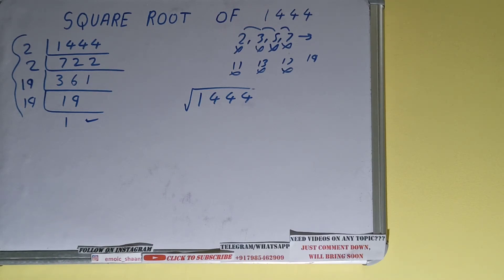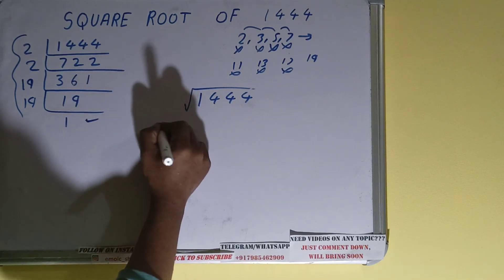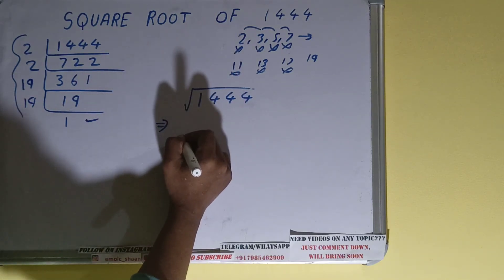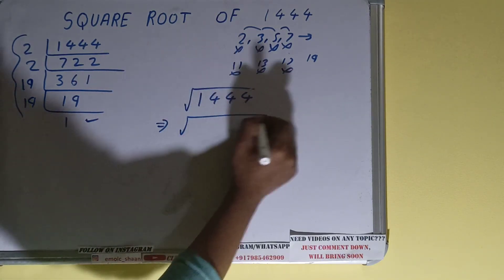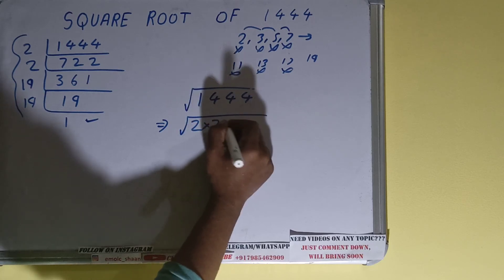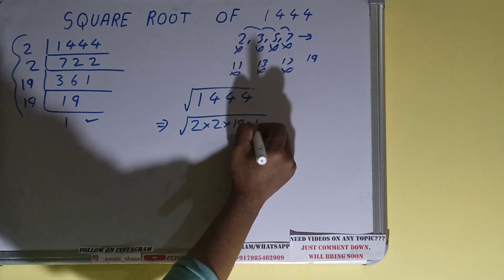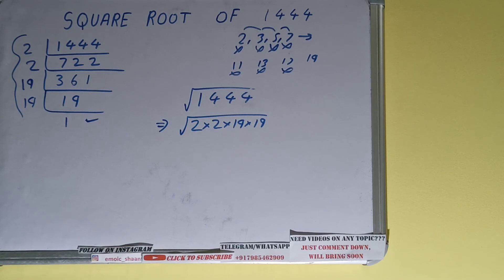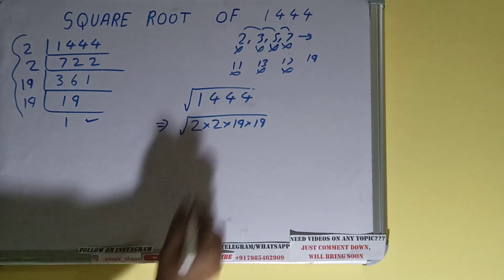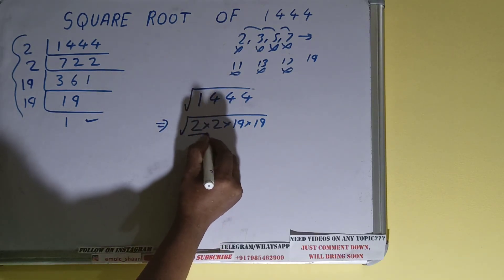So what we need to do is instead of the number 1444, we can write its prime factors: that is 2 × 2 × 19 × 19. And the next thing we need to do is form pairs. For every pair, like this is one pair, another pair is this - pair is basically a group of two or set of two.